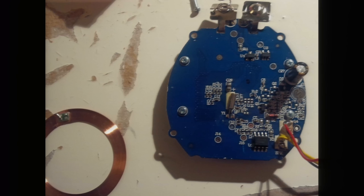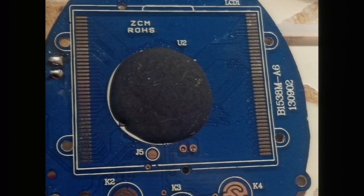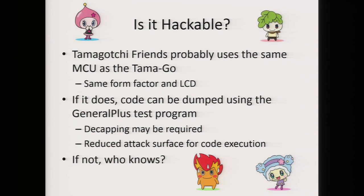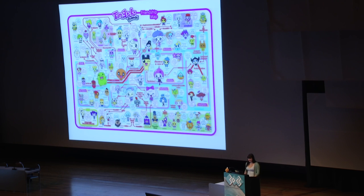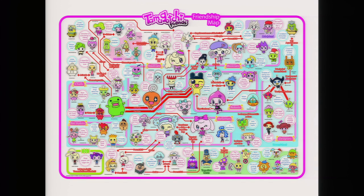Once again, this is the same blob — I'm not sure if it's the same microcontroller because it looks a tiny bit smaller, but the functionality is so similar and it even uses the same images that I think it probably is. I think it probably uses the same MCU, so we could probably dump the code using the General Plus test program, although decapping may be required to bond the wires. There's also a reduced attack surface for code execution because there aren't figures anymore, but I'd say there's about a 50-50 chance there's a vulnerability in the NFC that can be used to execute code. And just one last fun thing — this is the chart they provide of how the Tamagotchi works. If this is for small children, wow, I imagine what it looks like in IDA.